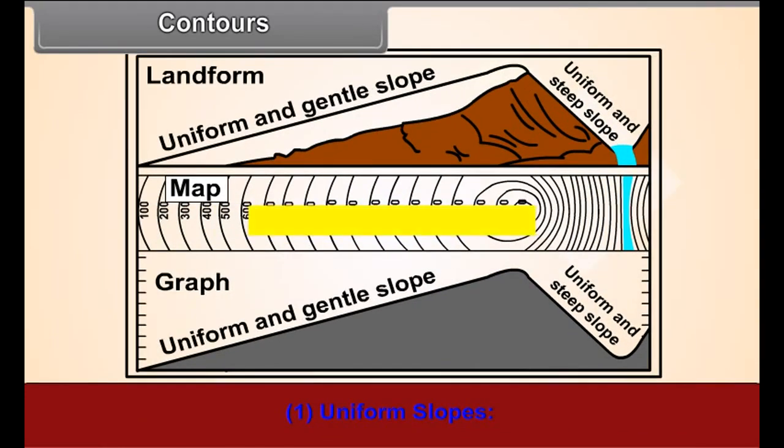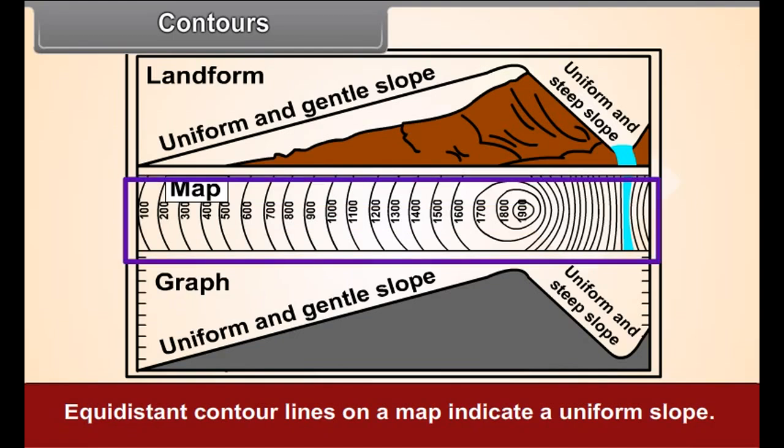Number 1. Uniform slope. Equidistant contour lines on a map indicate a uniform slope.